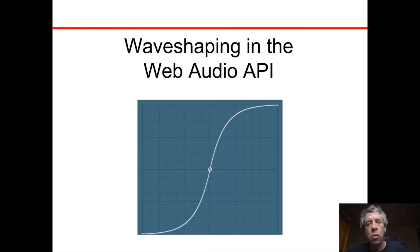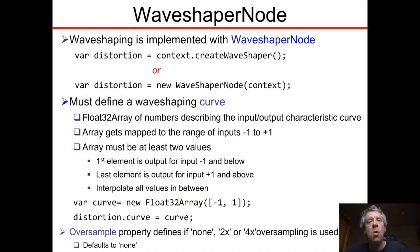Within the Web Audio API, wave shaping is implemented using what's known as a WaveShaperNode. It's an audio node just like all of the other ones. It's not a source node, it doesn't need to be started. It takes audio as input and produces a modified version of the audio at the output.